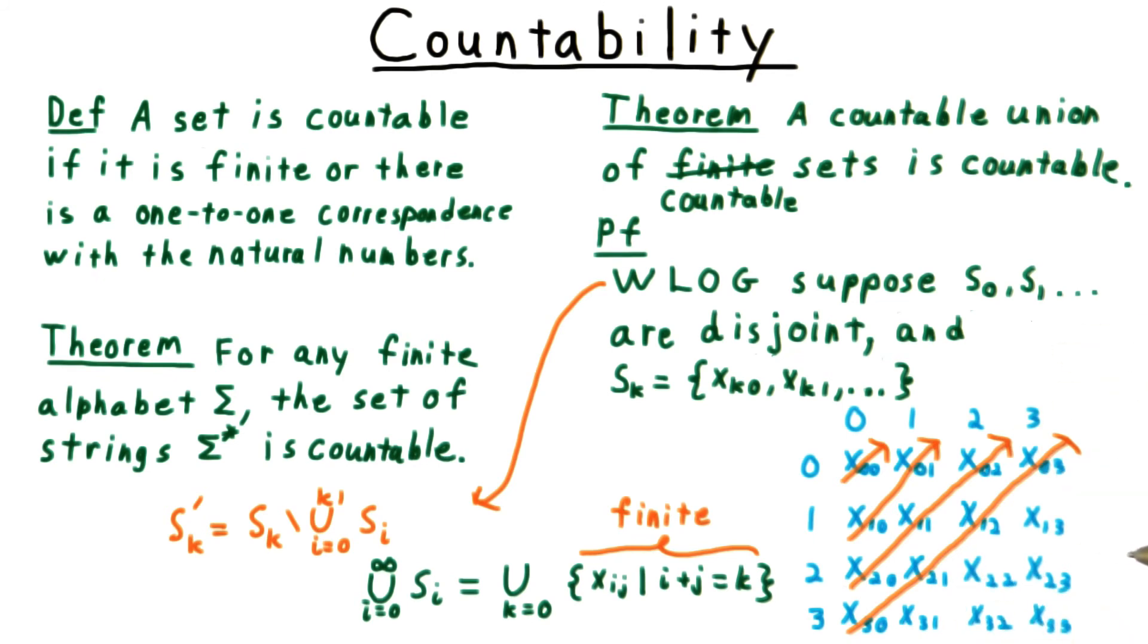Note that this same idea proves that the rationals are countable. Imagine putting all the fractions with a 1 in the denominator in the first row, all those with a 2 in the denominator in the second row, all those with 3 in the denominator in the third row, and so on and so forth.